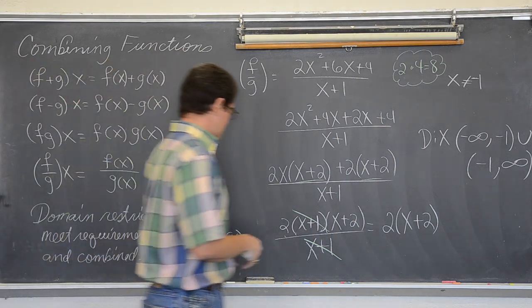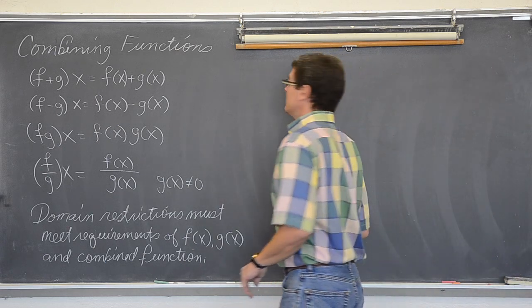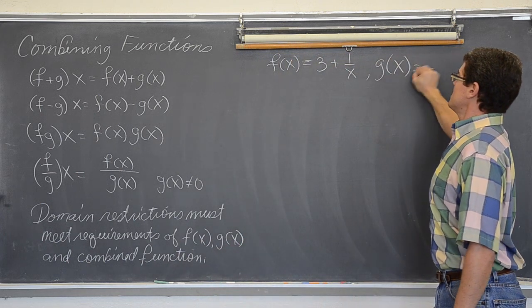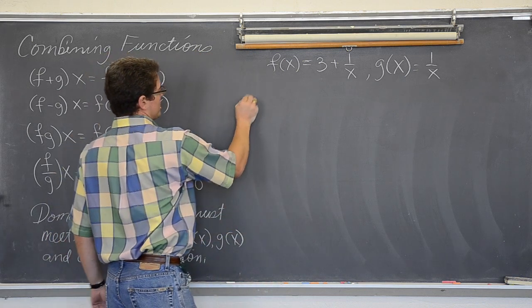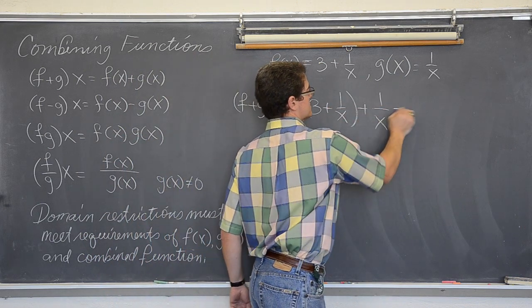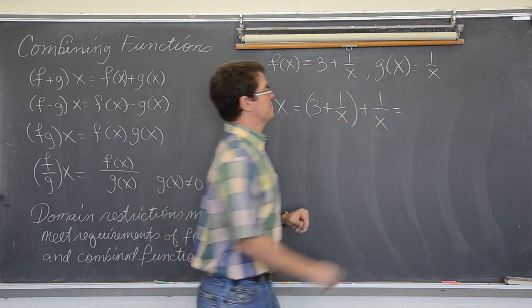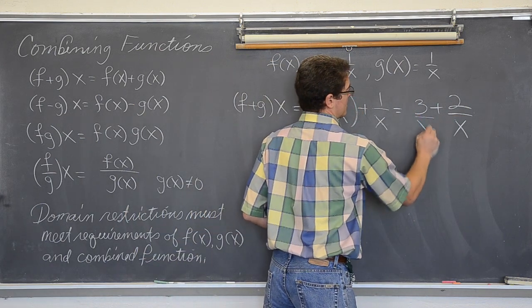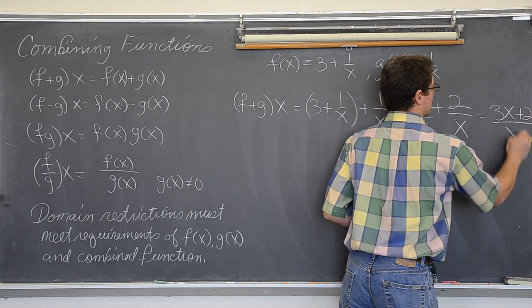Now let's look at the next example. f(x) equals 3 plus 1 over x, and g(x) equals 1 over x. Both of these are undefined at 0, so that is a restriction on the domain. For addition, f plus g of x gives 3 plus 1 over x plus 1 over x. We already have common denominators, so 3 plus 2 over x. If your teacher wants only one fraction, multiply top and bottom by x to get 3x plus 2 over x.